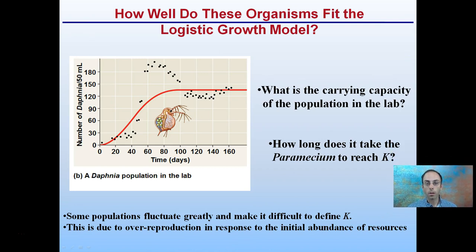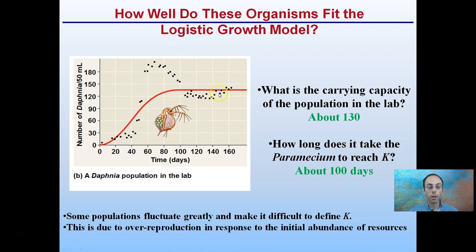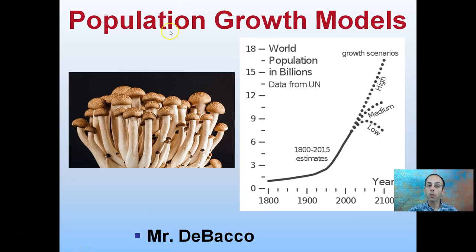Now let's look at a more complicated example: the paramecium. What's the carrying capacity and how long does it take to reach that? Some populations fluctuate greatly, making it difficult to define carrying capacity — some overshoot and then undershoot, so we look at where the leveling off occurs. The carrying capacity is about 130, as you see here, and it takes approximately 100 days to level off and reach that determination.